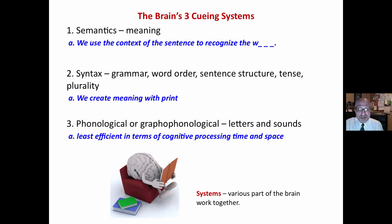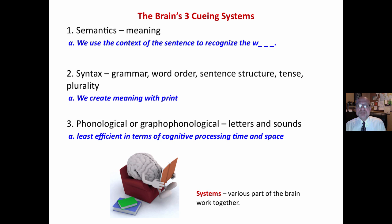Phonological or graphophonological cueing involves the letters and sounds. This is the least efficient in terms of cognitive processing time and working memory space — how long it takes and how much space it occupies. These are the three systems the brain uses to cue us in to what a word might be.